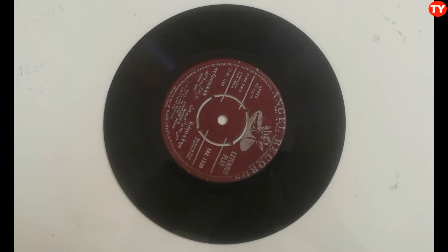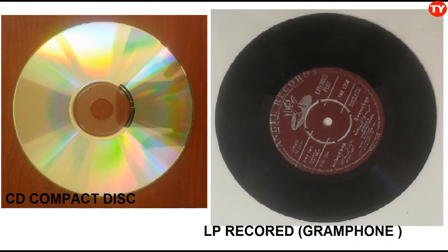The LP record's life gets reduced with each play due to the constant movement of the pickup needle on the record surface. In CDs, we can access and play any track from any part of the disc. In a gramophone, we have to manually search on the LP record.